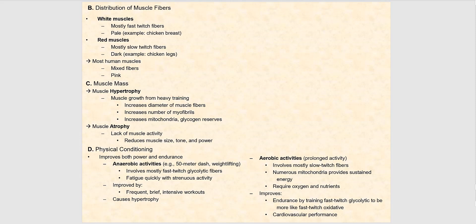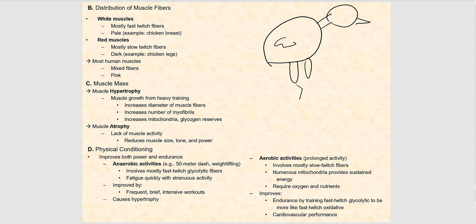Using the chicken as an analogy: the breast meat is white because it contains mostly fast twitch glycolytic fibers with relatively few blood vessels. The chicken legs — commonly known as dark meat — contain mostly slow twitch oxidative fibers, with many blood vessels supplying the muscles, giving them that darker color.